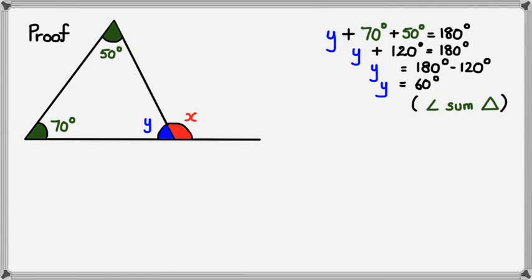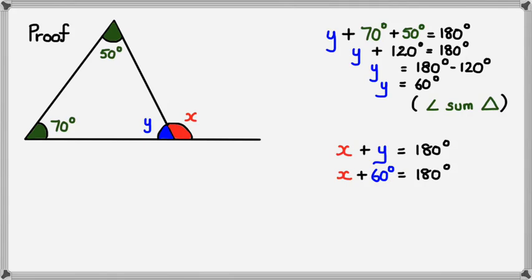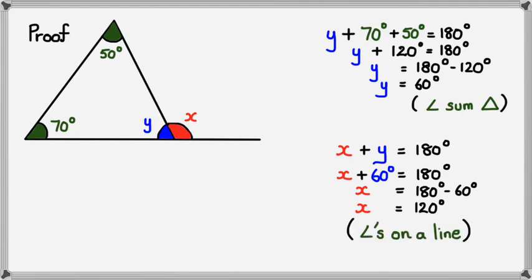Now that we have Y, we can figure out X, because angle X and angle Y are part of a straight line. So angle X plus Y equals 180 degrees, meaning X plus 60 equals 180 degrees. Rearranging, X equals 180 minus 60, so X equals 120 degrees. The reason: angles on a straight line add up to 180 degrees.